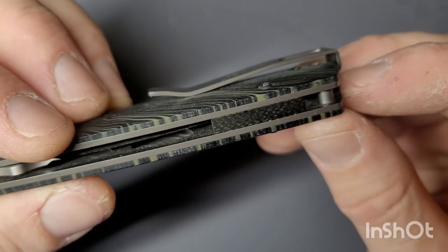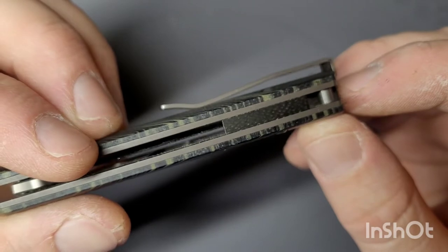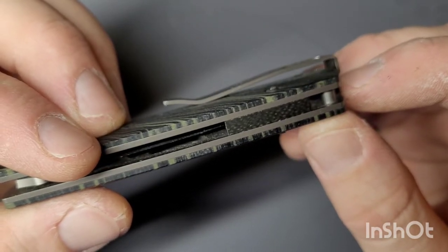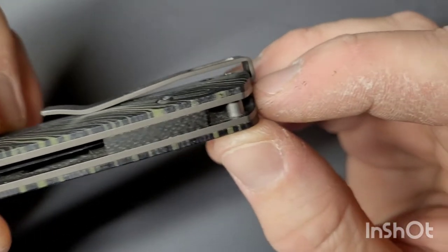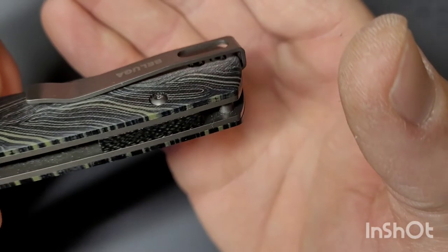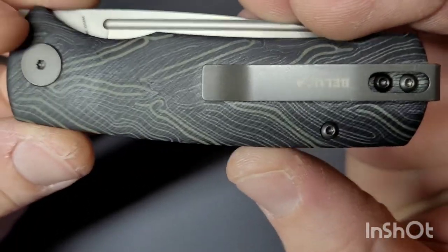As you can see it's a deep carry pocket clip. The screws are pretty much flush. You really don't have any issues there. So it's pretty nice going in and out of the pocket.